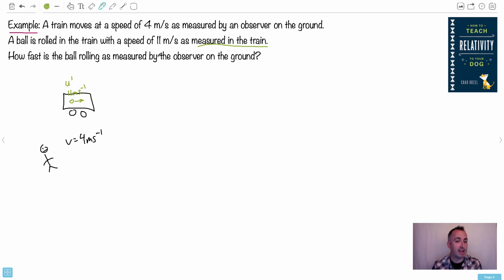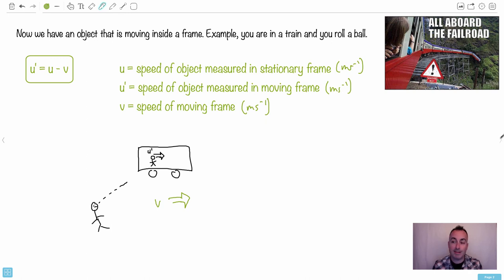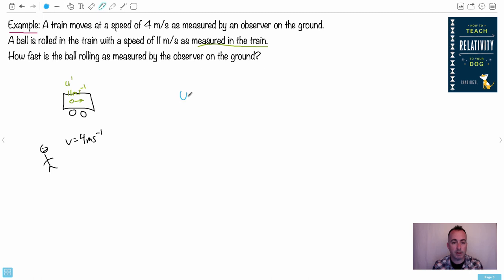Then relativity becomes a lot easier. So this is U prime. We've got V and the question is how fast is it rolling as measured by the observer on the ground? In other words, me who's sitting there watching this thing go by, how fast will that ball seem to be moving? So U prime equals U minus V. I want U. So what I do is I move the minus V over. It becomes a plus V. So U prime plus V. That would be U. U prime was 11. V was 4. So that makes U equal to 15 meters per second.